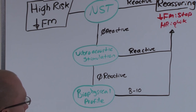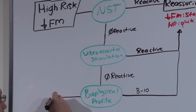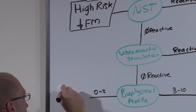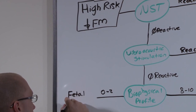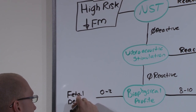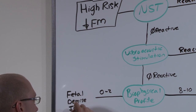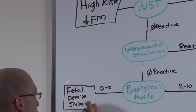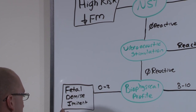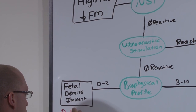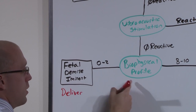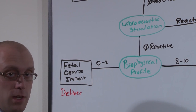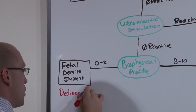If baby is doing really poorly — a score of 0 to 2 — fetal demise is imminent, and it may have already occurred. You have to deliver now. Because this is a very severe condition and mom is not even in contractions yet, you're probably going to do a C-section.